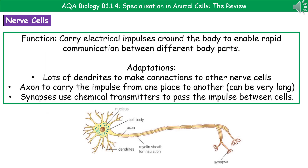Now we'll have a look at three key examples that you need to know for your AQA exam of specialized animal cells. The first one is the nerve cell. The whole purpose of nerve cells is to carry electrical impulses around your body to allow us to communicate really quickly between different body parts. There are three key adaptations that you need to know about here.